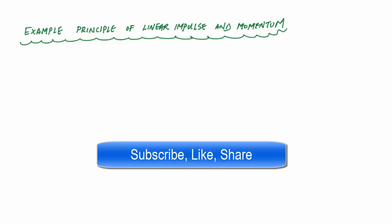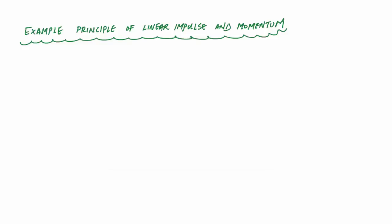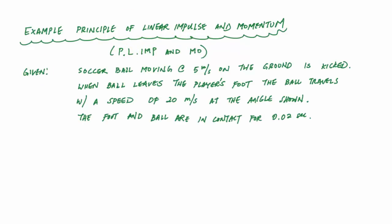All right, what's going on everybody and welcome back to Structure Free Learning. In this video we're going to do an example problem applying the principle of linear impulse and momentum, what I like to call PLIMP and MO. So I have a soccer ball that's moving at 5 meters per second on the ground.